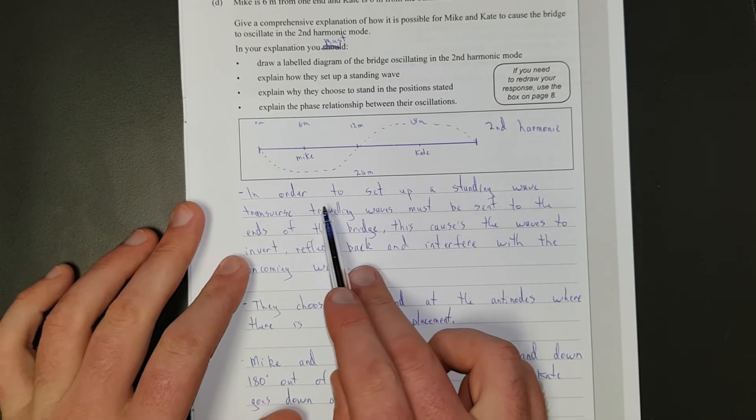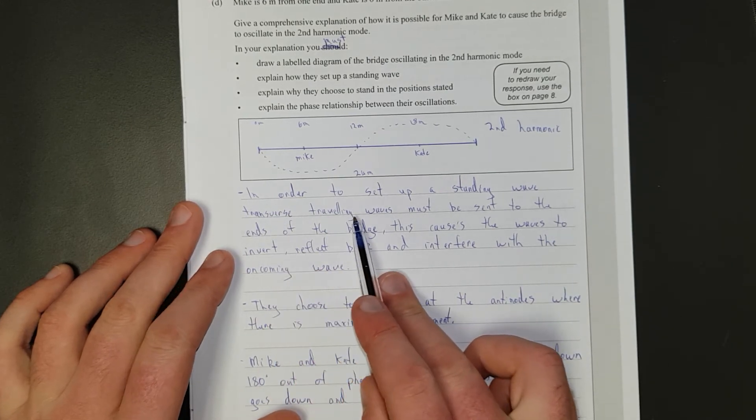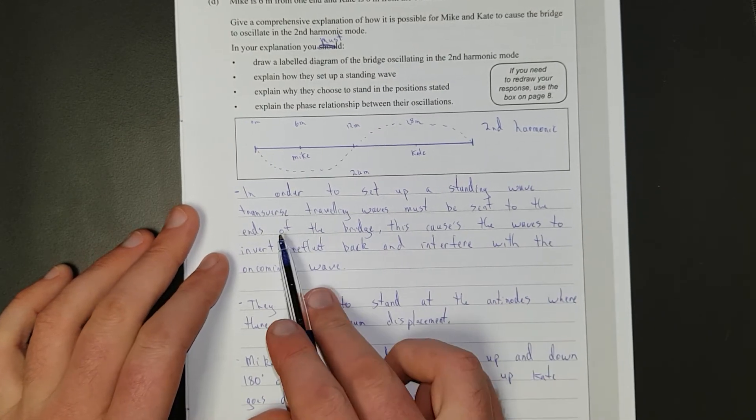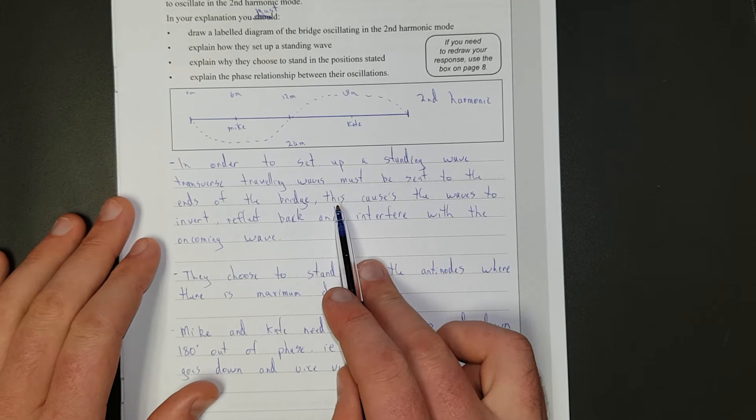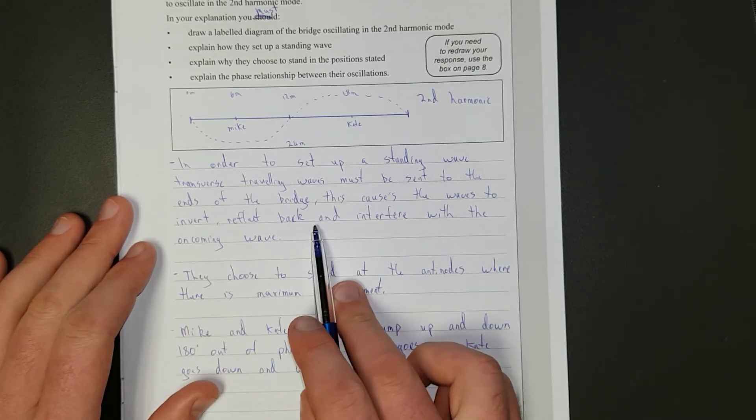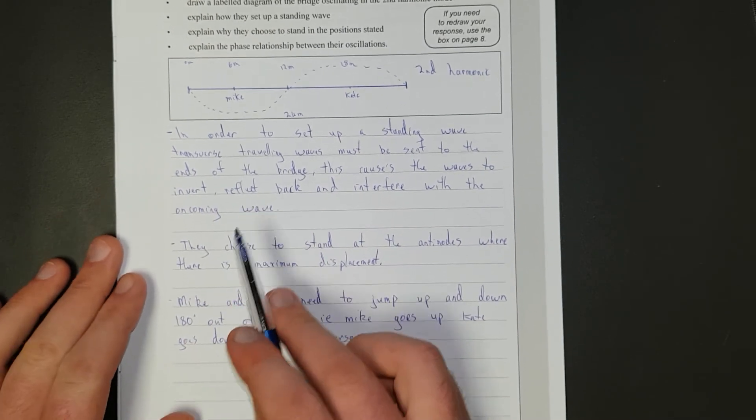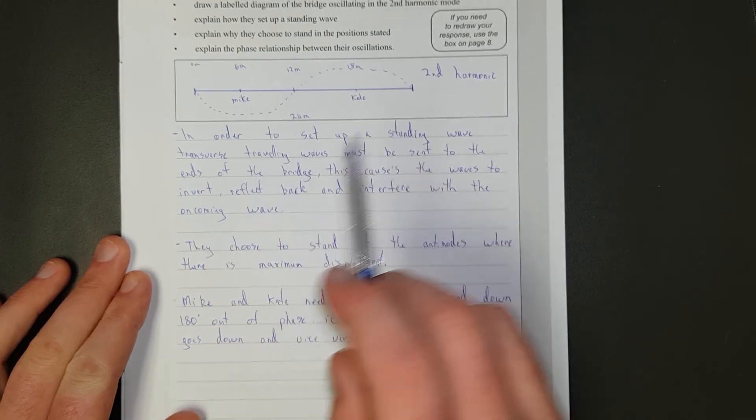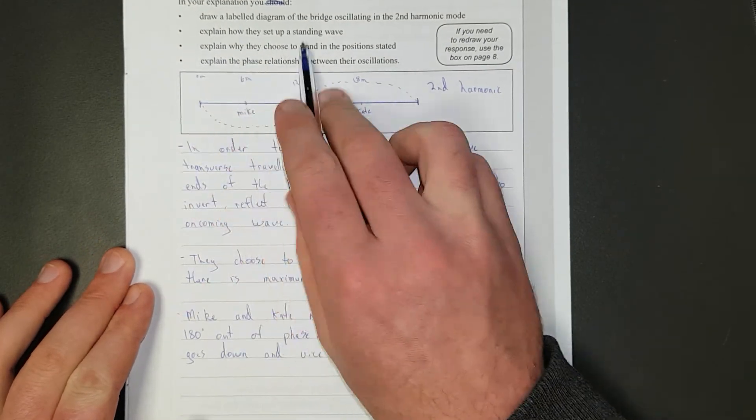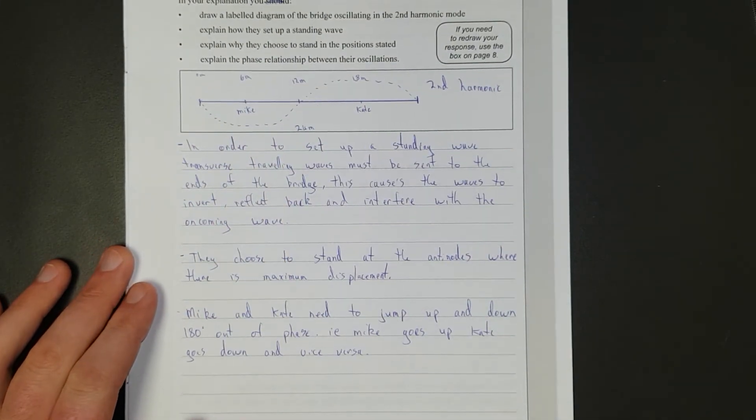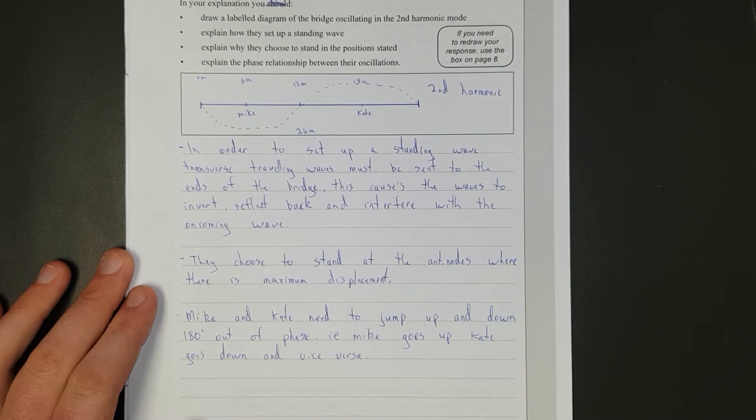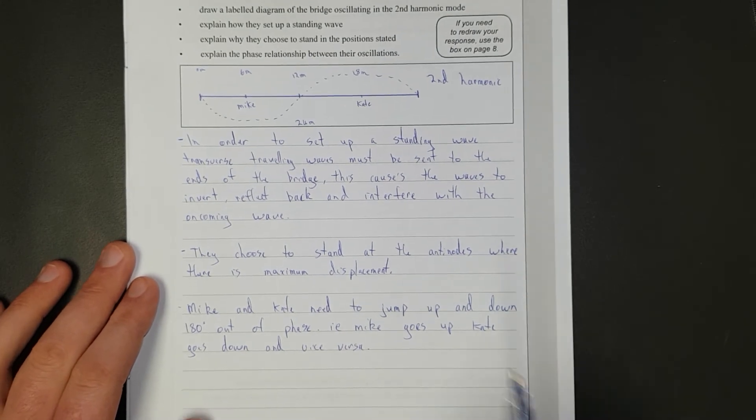I'm going to pause the video. We'll just write here a second harmonic. And I'll write out the answer and then discuss it. So I've said, in order to set up a standing wave, transverse traveling waves must be sent to the ends of the bridge. This causes the waves to invert, reflect back, and interfere with the oncoming wave. So it's the first - how do you set up a standing wave? You need to send it to a fixed point where it can invert, reflect, and interfere with the oncoming wave.